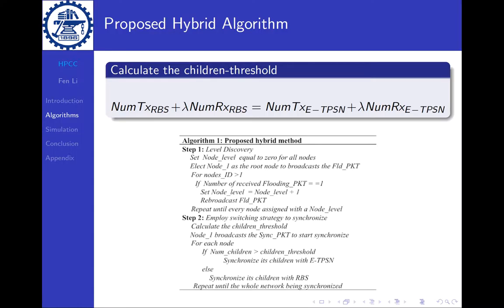In our algorithm, the first phase is still the level discovery. And for the second step, we can employ a switching strategy to synchronize. We will first calculate the threshold, and after the broadcast, for each node, if the number of children is larger than the children's threshold, we will synchronize using E-TPSN.